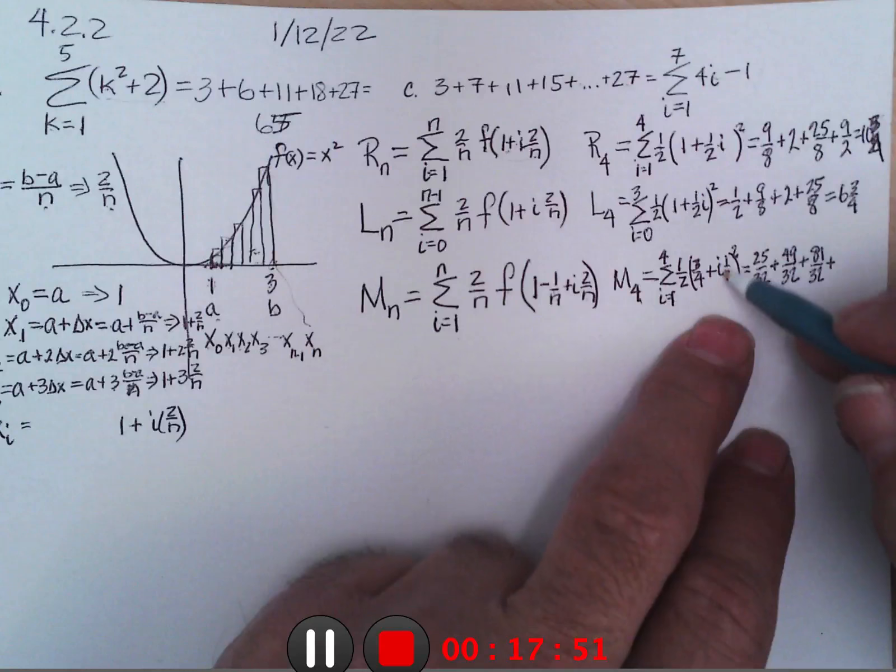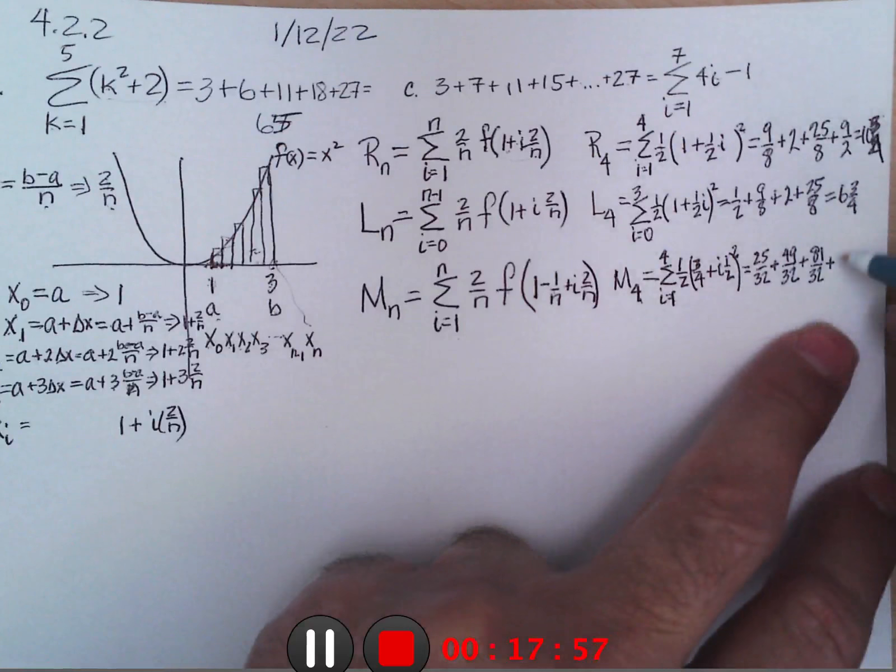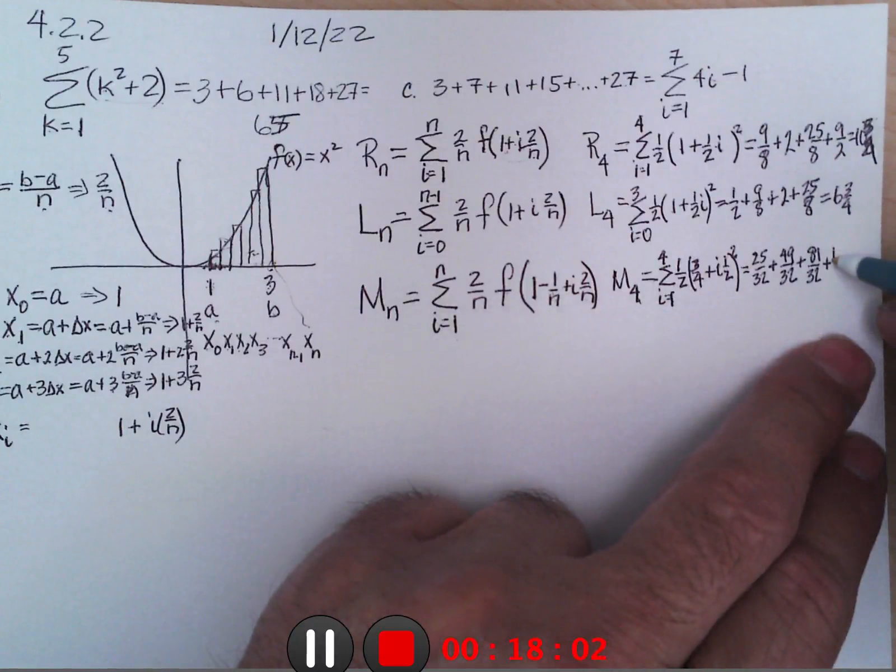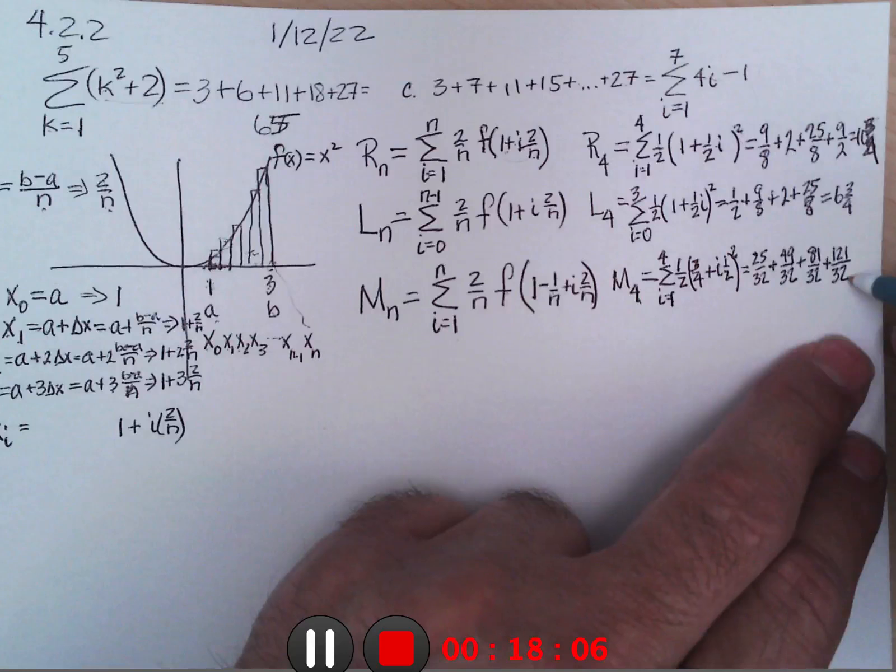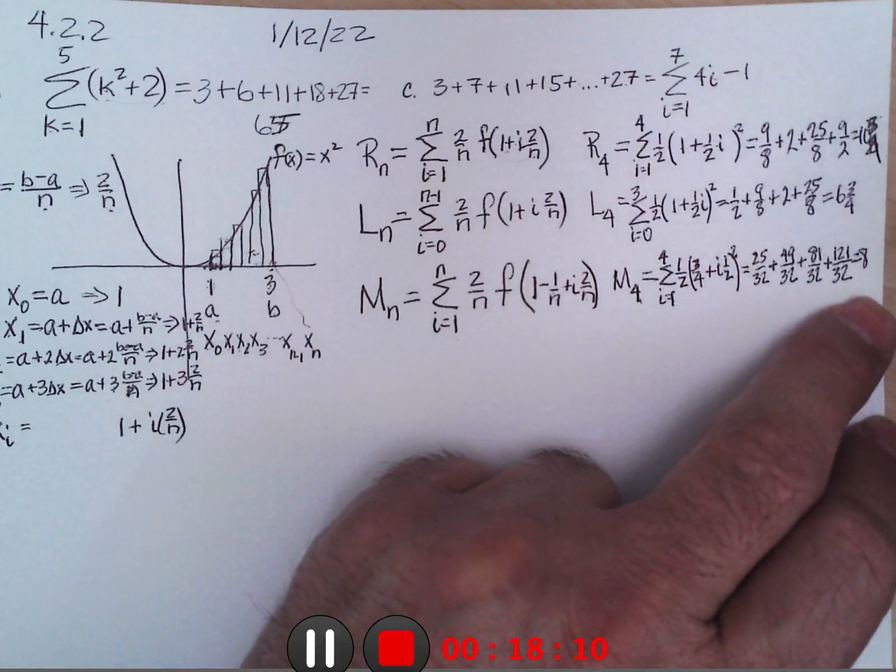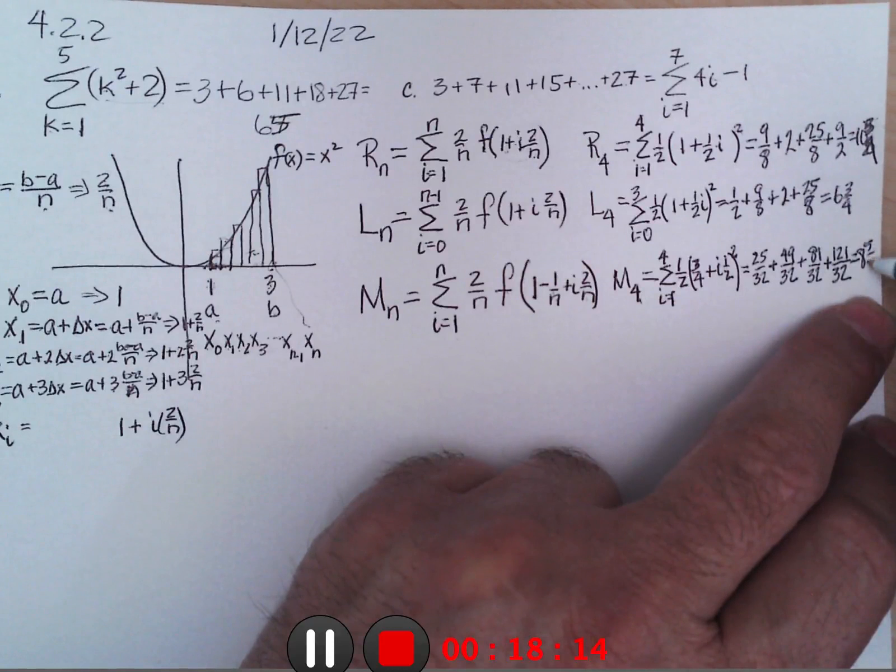I get 2 plus 3 quarters, that's 8, 9, 11 quarters squared is 121 sixteenths times 1 half is 121 thirty-seconds, which is 8 and 5 eighths, that's where the 5 eighths came in I think.